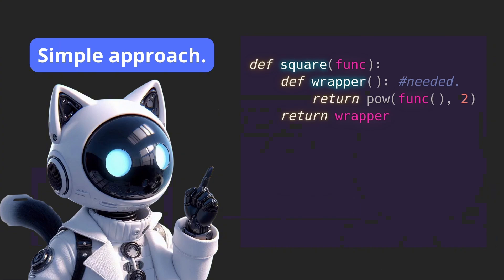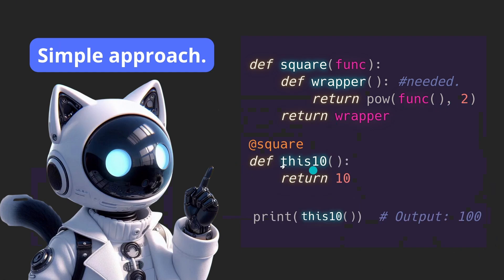Do not worry about that name, but what is needed is this wrapper. The wrapper is also a convention, and it's when most people declare a function inside of this square one. This line is basically what the function does — we just pass this argument with parentheses; if not, it will not be read as a function. Then we square this. So what this function will do is square, and then we return this wrapper.